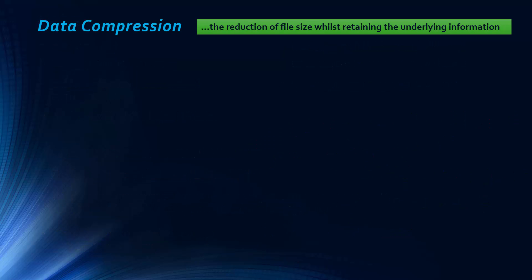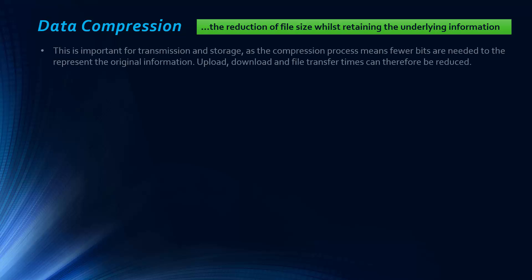If we now move on to look at data compression, this is the reduction of file size whilst retaining the underlying information. It's not just getting rid of information for the sake of it, we're trying to reduce the file size but we want our original information to some extent. Compression is really important for transmission and storage because fewer bits are needed to represent the original information. The result is upload, download times, and file transfer times can be reduced, which is obviously a big advantage.